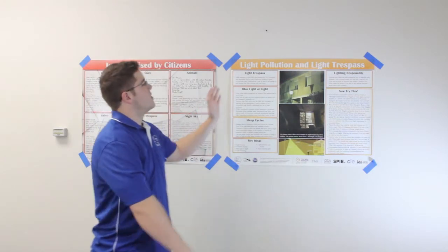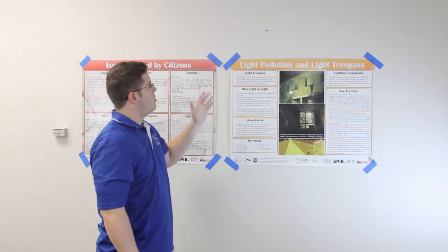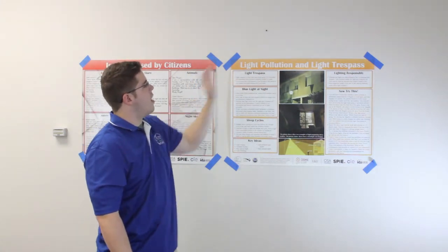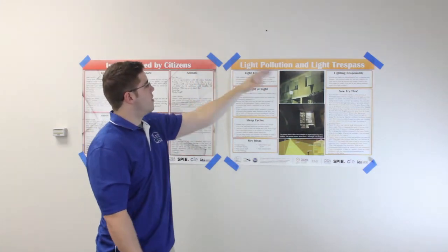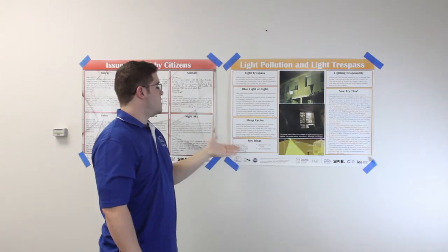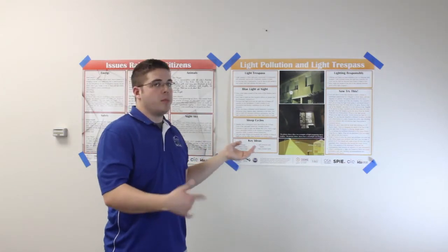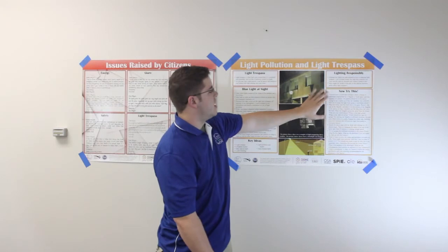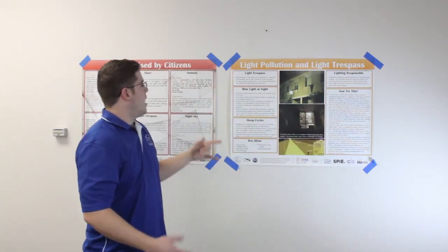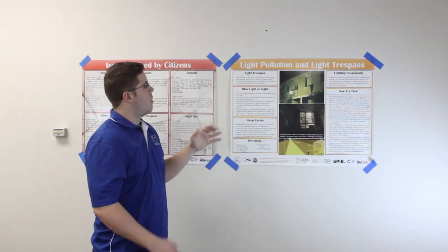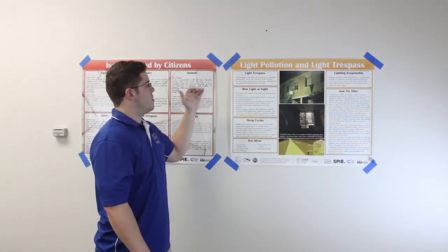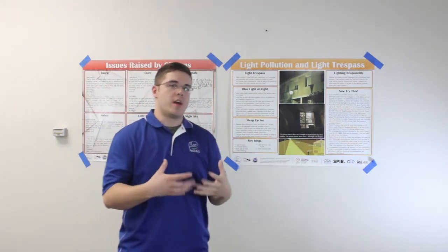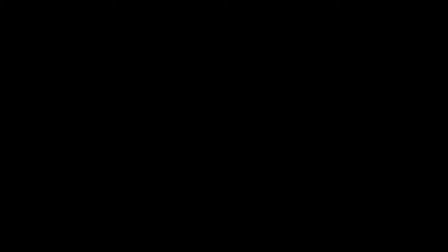In this light trespass folder, before you get started, you should probably review it because it has a broad definition of what light trespass is, it gives students some key ideas for further research on their own, and it has the activity itself. The key idea you want to hammer home first is blue light at night and sleep cycles, because that sets up why light trespass is a problem.